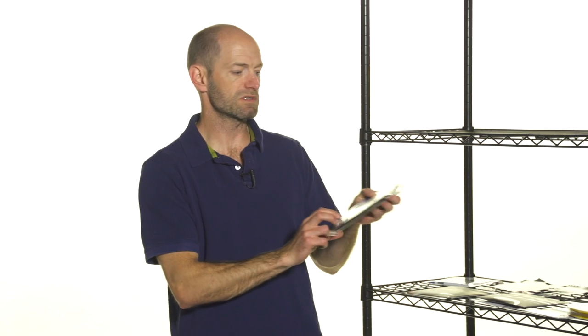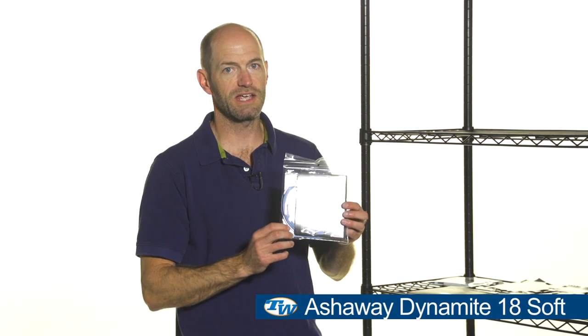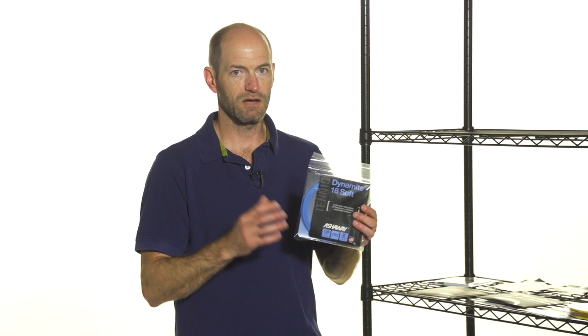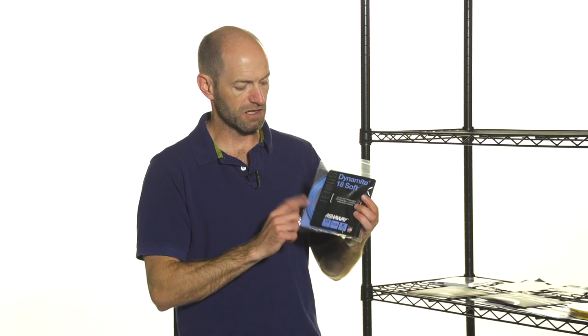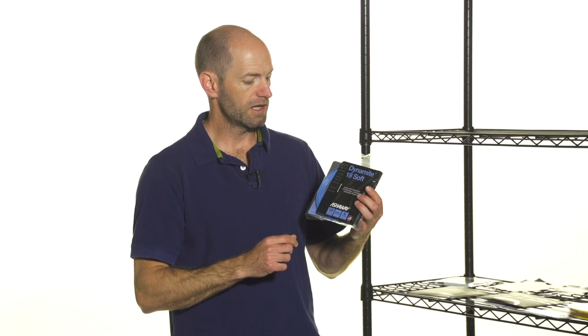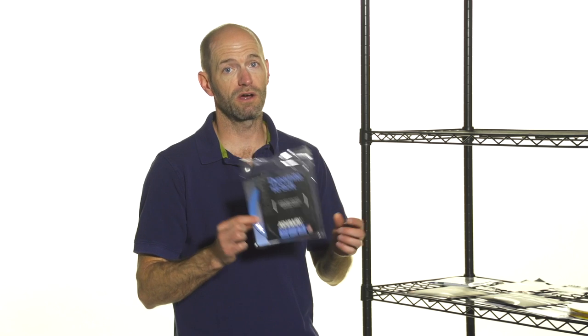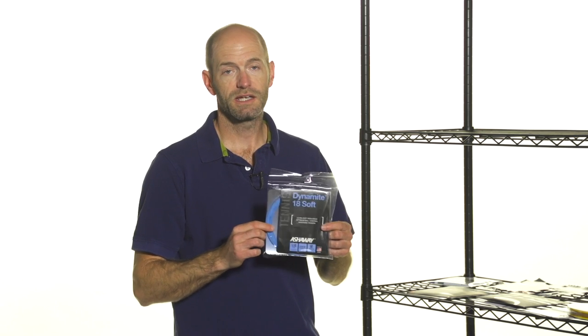Lastly, we're going to look at a string that lives up to its name: this is Ashaway Dynamite 18 Soft, and it is one of the softer strings we've tested in our lab. Really pockets the ball nicely, comes in this fun blue color, and this is an 18 gauge—exceedingly soft, very thin string. Again, if you're not a string breaker, great way to go. It's going to last a long time in your racket and just offer you a really nice feel on the ball.